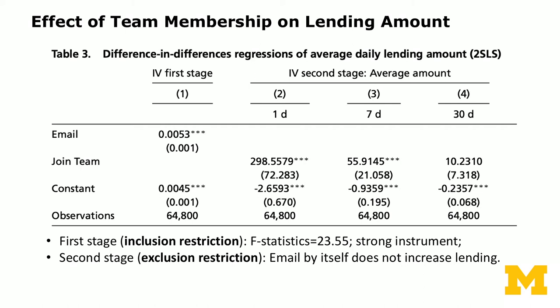In the first stage, we use our instrument — which is what we constructed in the experiment. It's exogenous, so it should not be correlated with the error term. The instrument is whether you received an email from us or not. We see that receiving an email is a significant predictor of the likelihood of joining a team. Receiving an email increases the likelihood of joining a team by about half a percentage point.